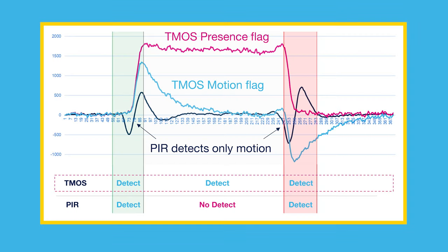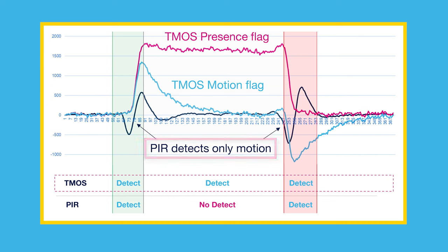Let's observe the graph depicted on the right and imagine that you're in the office working at your desk and your lights have a PIR sensor to monitor the environment. Without any significant motion, the lights will eventually turn off after a few minutes, and you need to intentionally move or wave your arm in order for the lights to turn back on again.